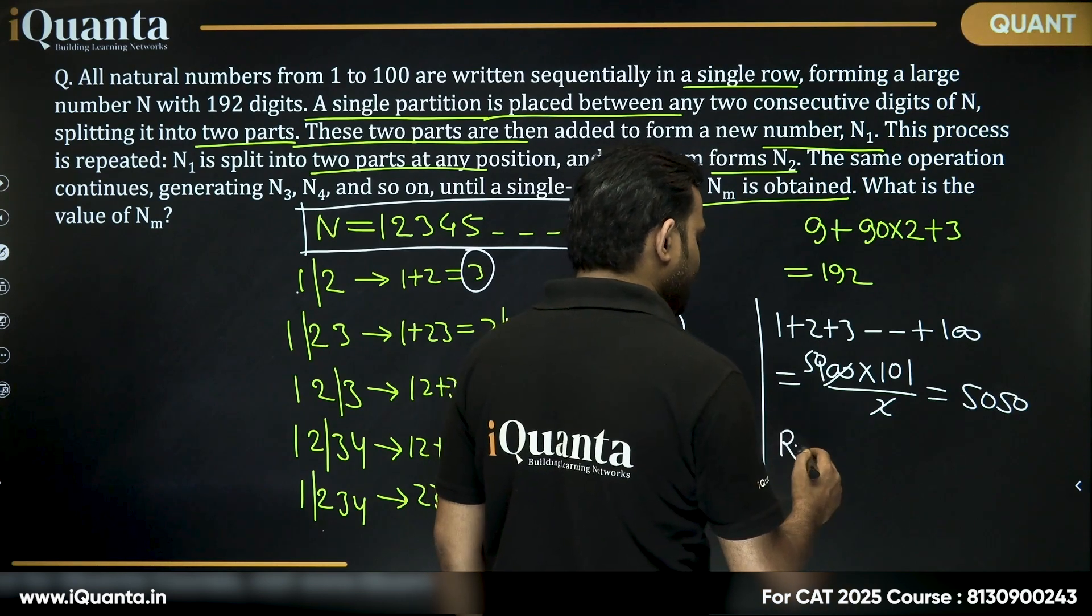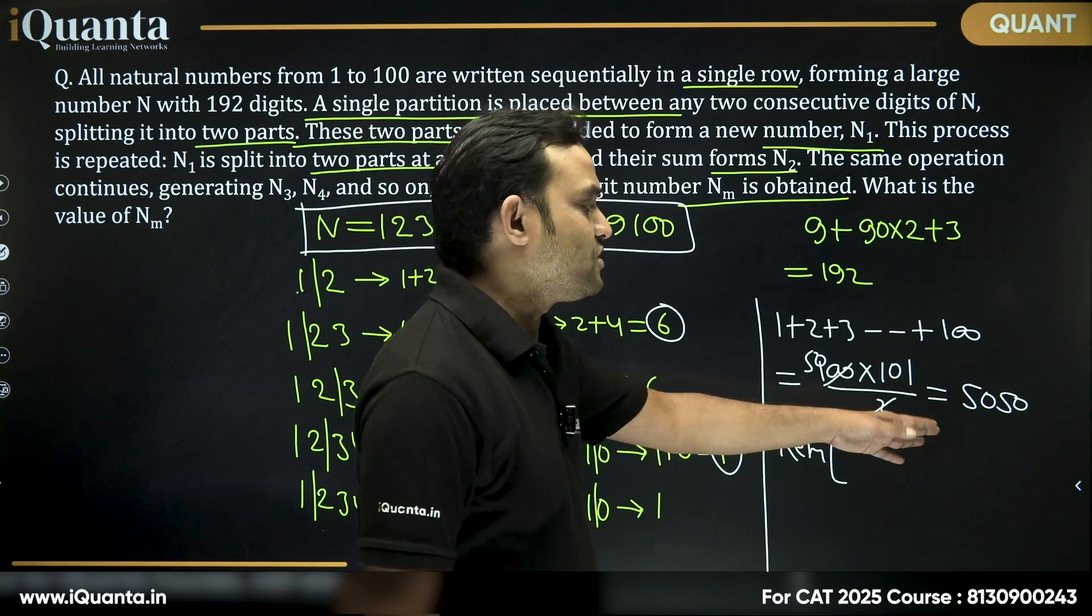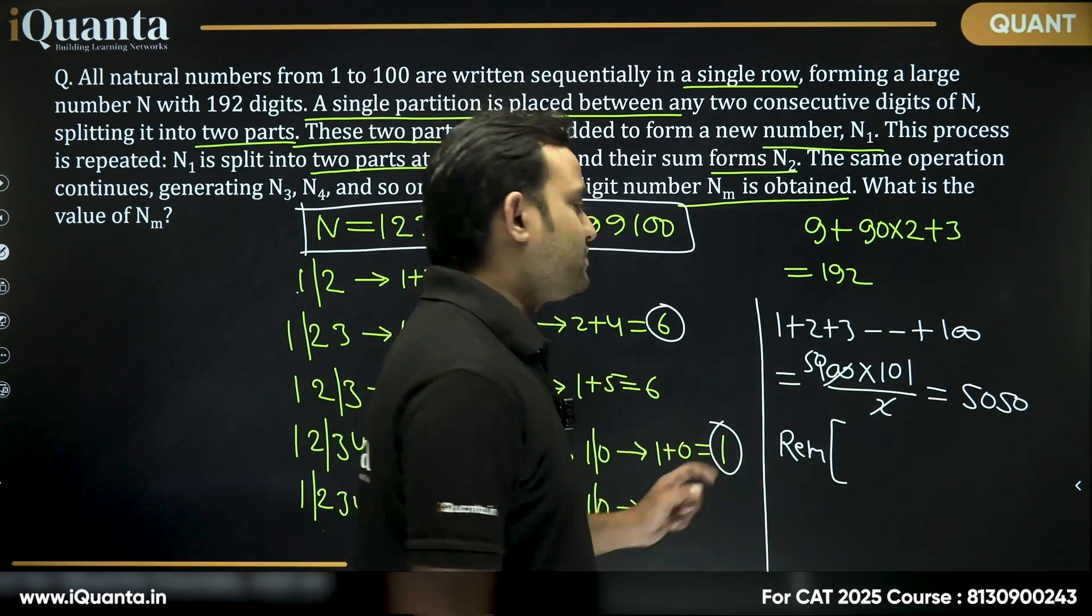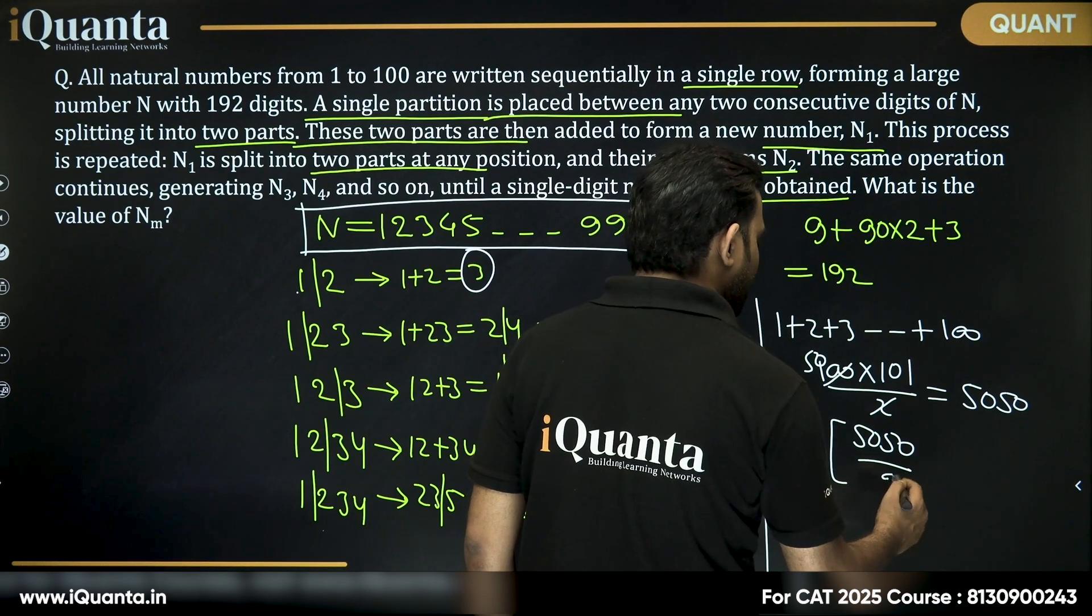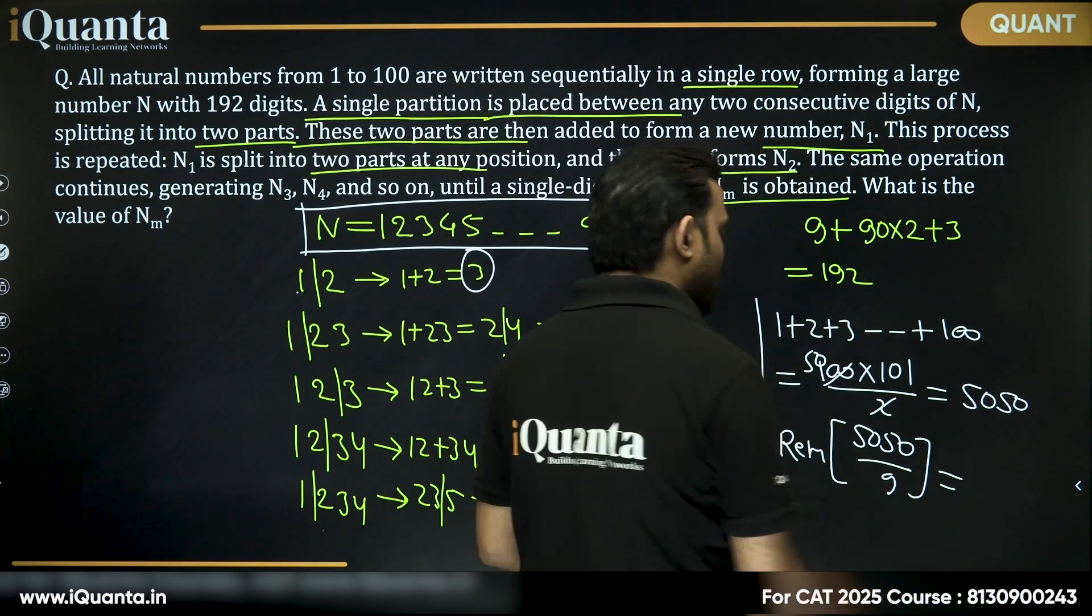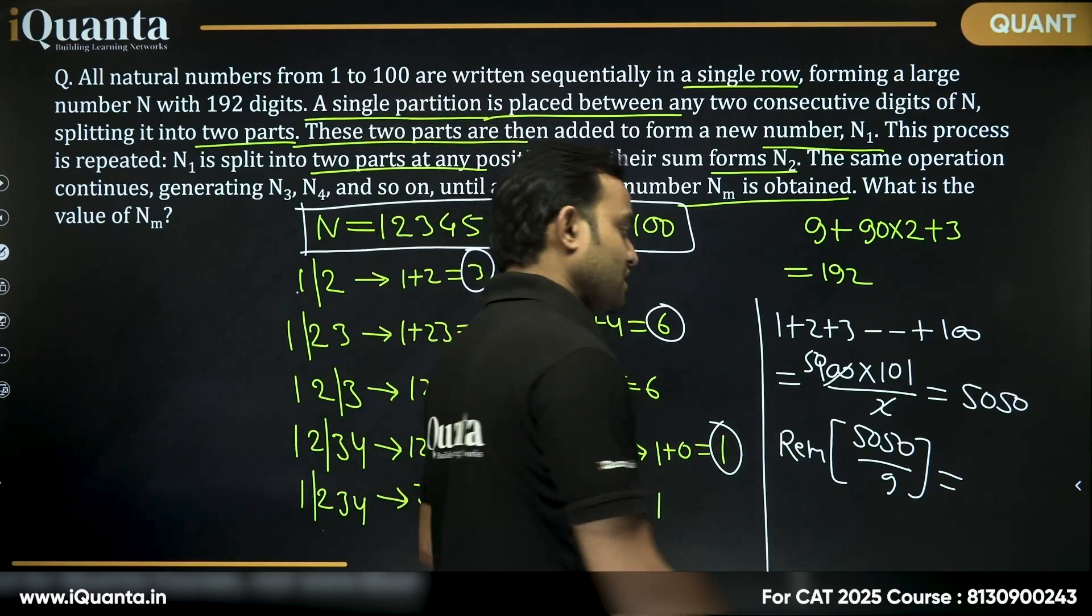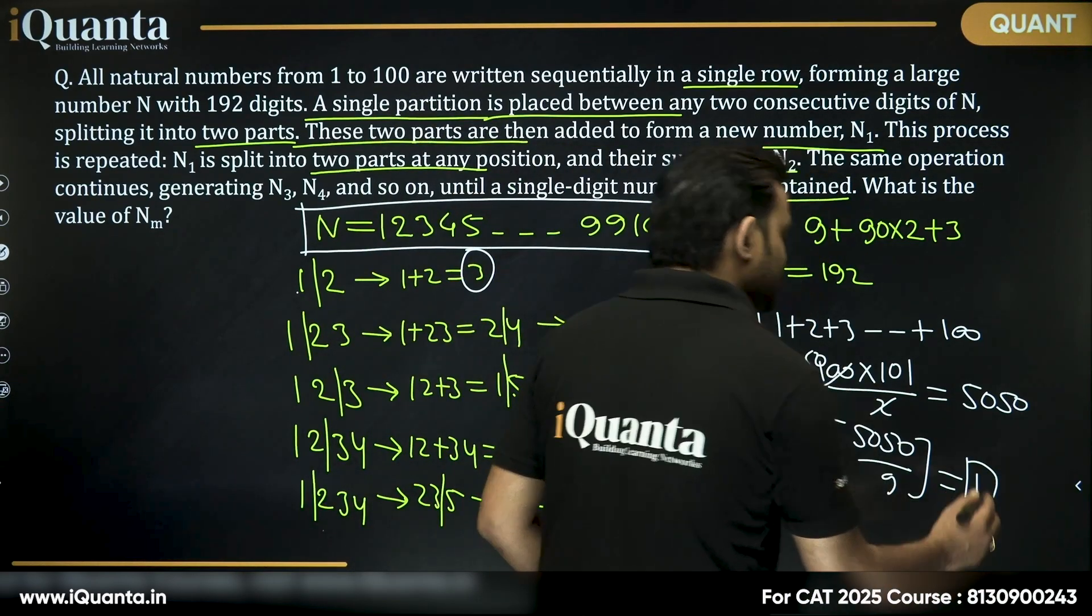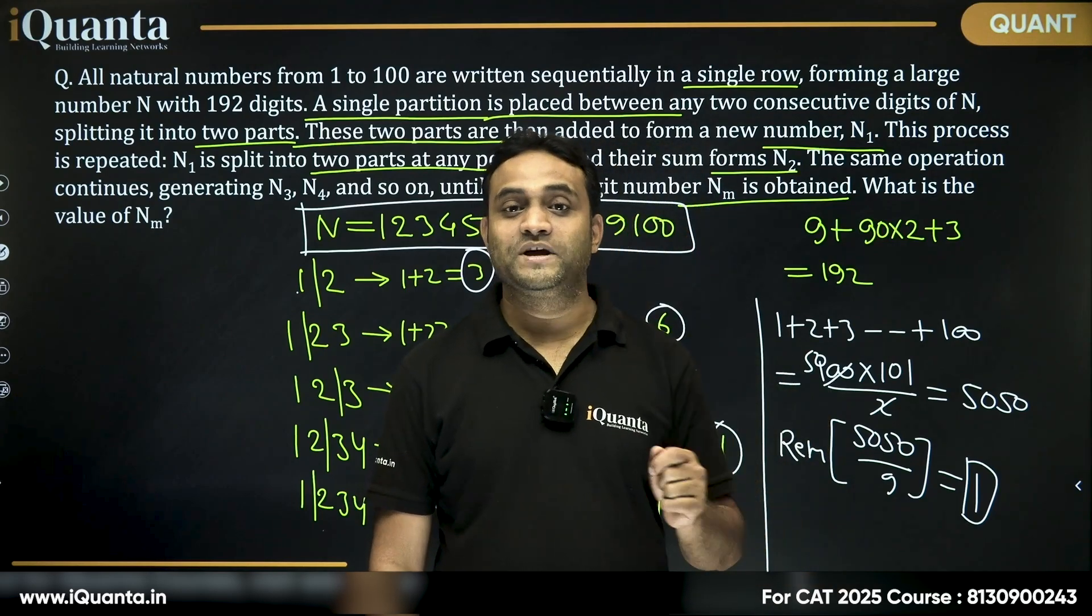So, what is the remainder here? When 50, again, we can also add the digits of 5050, still it will have the same result. So, 5050 when divided by 9 will be equal to 5 plus 0 plus 5 plus 0, which is 10. Again, 1 plus 0 is 1. This is going to be our answer that the single digit nm will be 1.